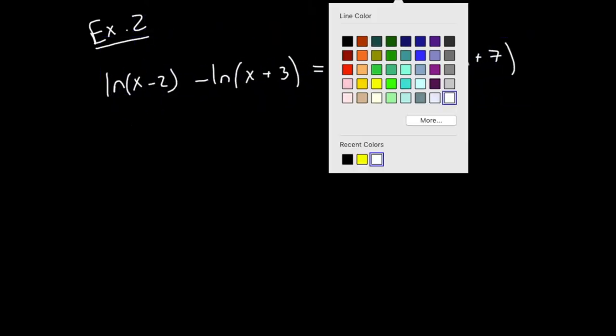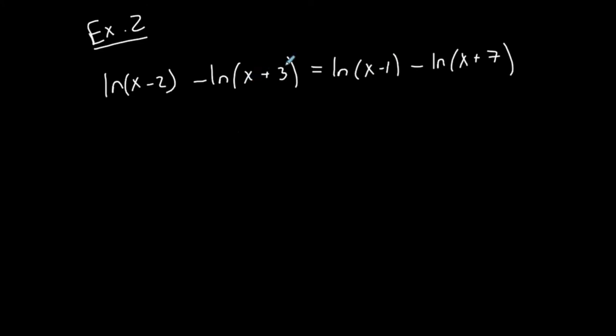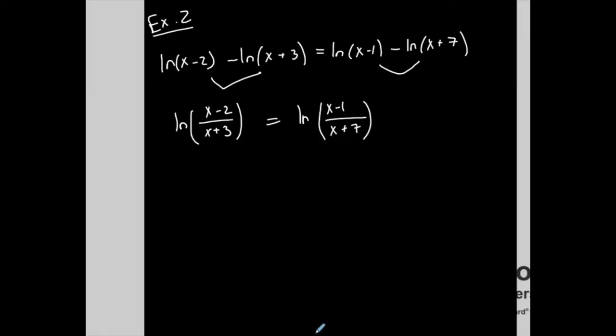They're all natural logs, so the bases match, but I don't have a single log on the left and I don't have a single log on the right, so I'm going to create that. Subtraction of two different logs with the same base becomes quotient after a single log. Same thing here. Subtraction of two different logs becomes a quotient of a single log.